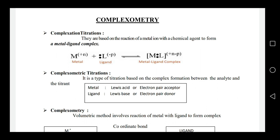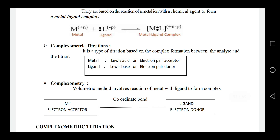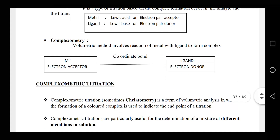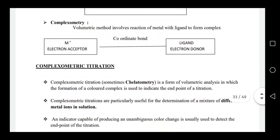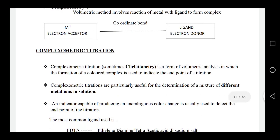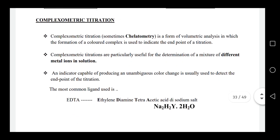The metal acts as a Lewis acid or electron pair acceptor, and the ligand acts as a Lewis base or electron pair donor. Complexometry is a volumetric method involving reaction of a metal with a ligand to form a complex via a coordinate bond. Complexometric titration, sometimes known as chelometry, is a form of volumetric analysis in which the formation of a colored complex is used to indicate the endpoint. It is particularly useful for the determination of a mixture of different metal ions in solution.